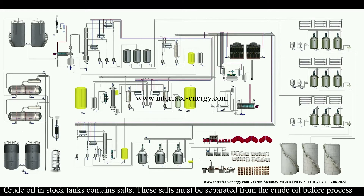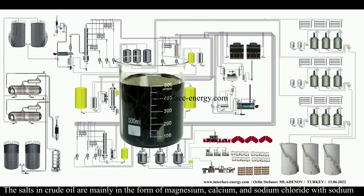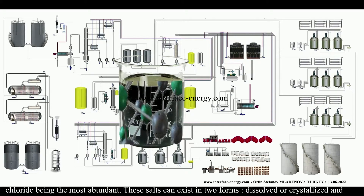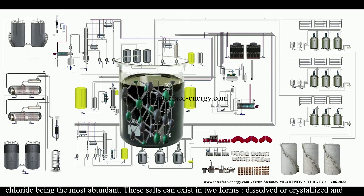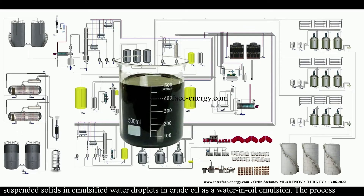Crude oil in stock tanks contains salts that must be separated before processing. These salts are mainly magnesium, calcium, and sodium chloride, with sodium chloride being the most abundant. They can exist in two forms: dissolved or crystallized and suspended as solids in emulsified water droplets within crude oil, forming a water-in-oil emulsion.